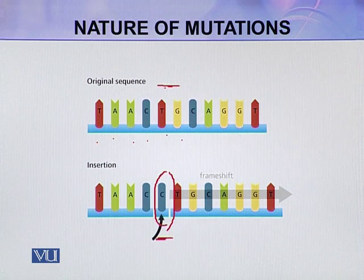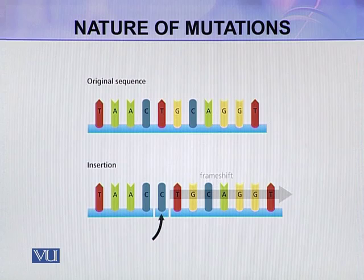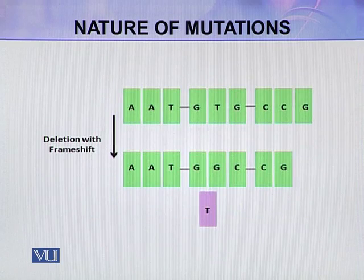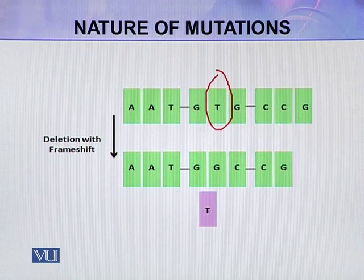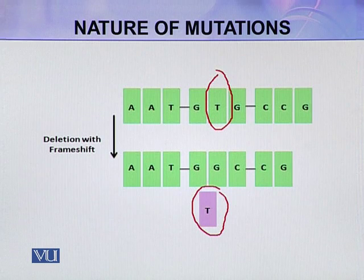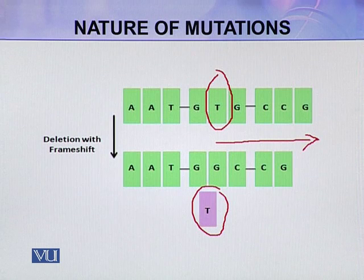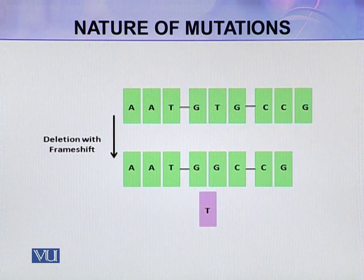By the insertion of this single base, the rest of the whole sequence will be frameshifted, disrupting the entire gene where this insertion took place. Similarly, this is a deletion — the T which was present in the original sequence has been deleted. From that position onwards, there will be a frameshift. So these are called deletions or insertions.